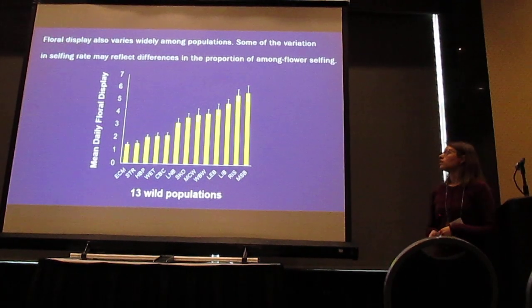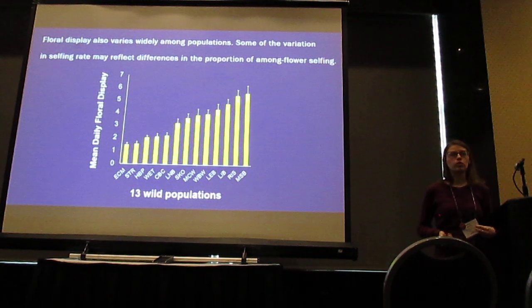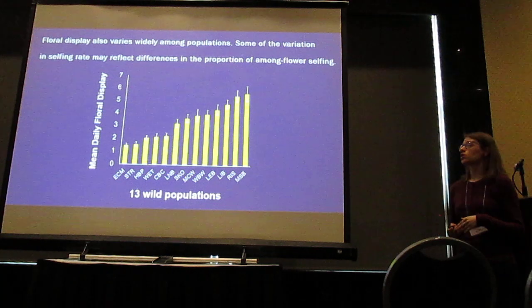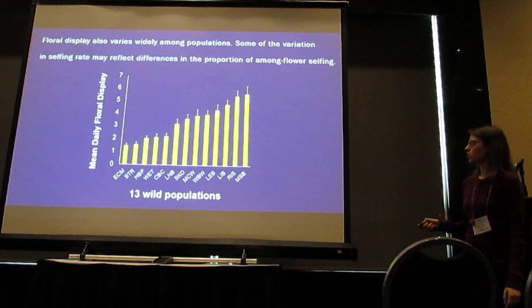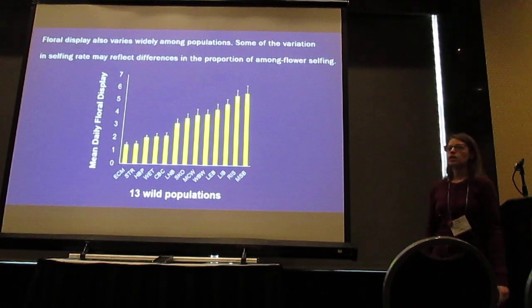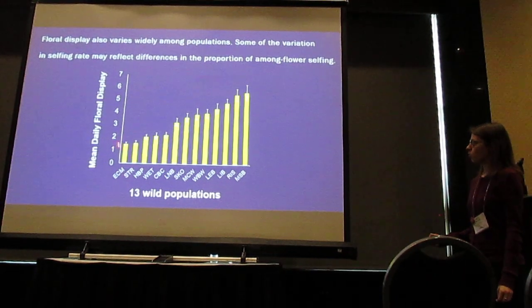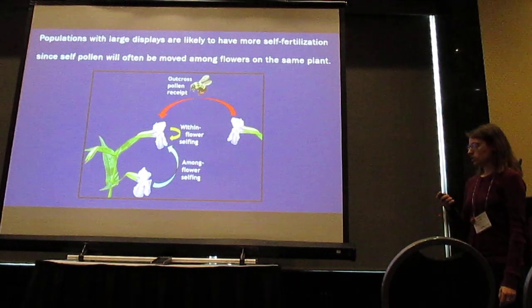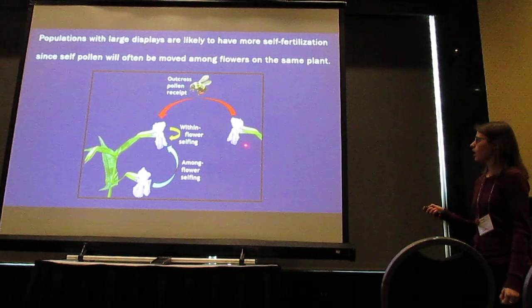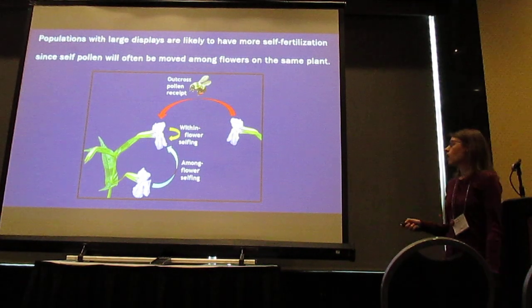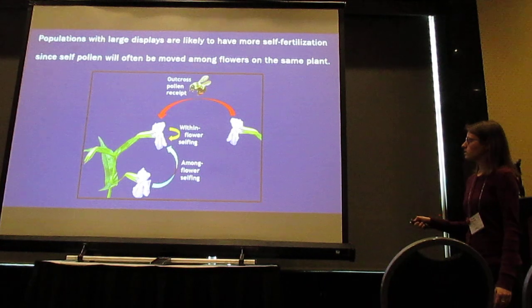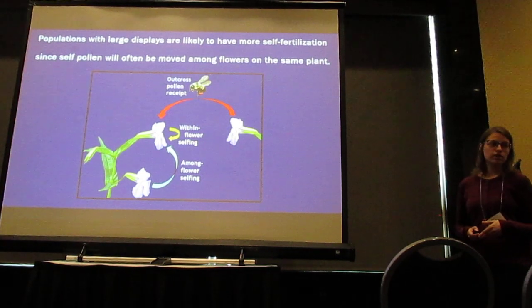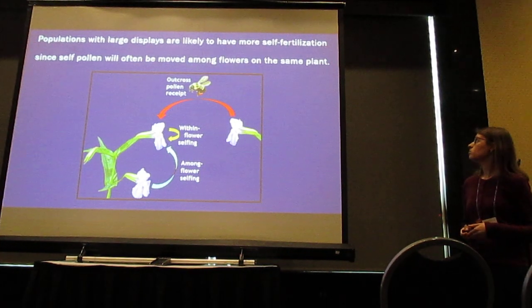Floral display also varies widely among populations. Floral display refers to the number of flowers a plant produces in a given day. Some of the variation in selfing rate may reflect differences in the proportion of among-flower selfing. Mean daily floral display ranges from 1.5 flowers per day to almost 6 flowers per day. Outcross pollen is received when a pollinator moves between plants, but pollinator movements within a flower or between flowers on the same plant transfer self pollen. Populations with large floral displays are likely to have a higher proportion of self fertilization.